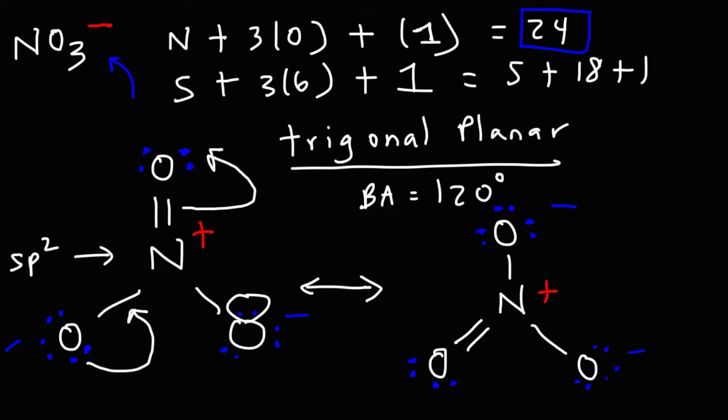So that's it for this video. Now you know how to draw the Lewis structure of the nitrate ion. You also know its molecular geometry, bond angle, hybridization, and you also know how to draw some of the resonance structures for this ion. Thanks for watching.